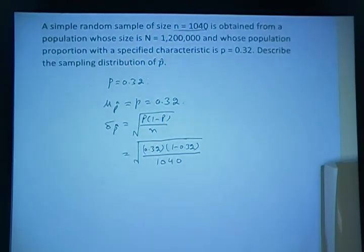So p times 0.32 and now you have 1 minus 0.32. So p times 0.32 divided by...